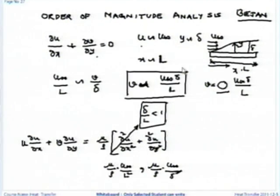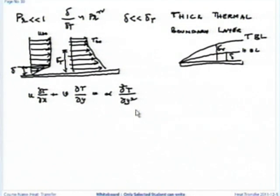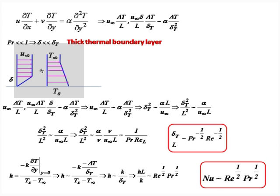I can write this directly now on the same arguments as for del squared u by del x squared. If I take del squared T by del x squared, I will get delta_T divided by L squared as opposed to delta_T divided by delta_T squared — delta_T squared sitting in the denominator will dominate, so I can neglect del squared T by del x squared. Within the thermal boundary layer, because my thermal boundary layer thickness is much larger than the hydrodynamic boundary layer, I make the velocity equal to u-infinity throughout.